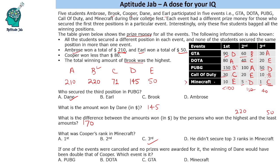If we remove Minecraft, Cooper becomes $70 and Dane becomes $145 - $5 = $140. So Dane is double Cooper ($70 × 2 = $140). That means the cancelled event is Minecraft. This was the solution to the set and the answers to all the questions.